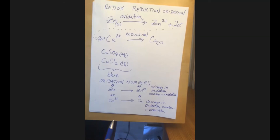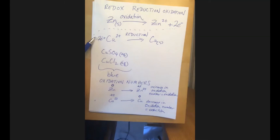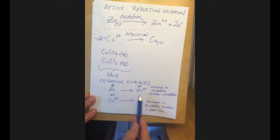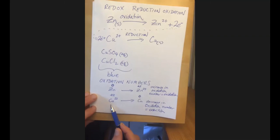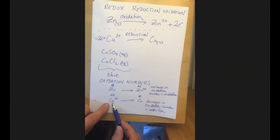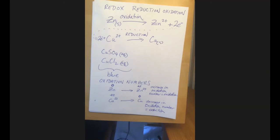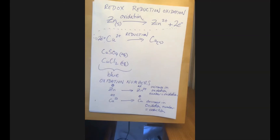This is all consistent: the species that increased in oxidation number became more positively charged because it lost something negative — electrons. The reduction reaction decreased its positive oxidation number because it gained electrons, something negative. These are slightly different ways of thinking about the same thing: the transfer of electrons from zinc to copper.